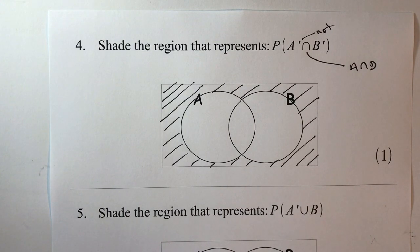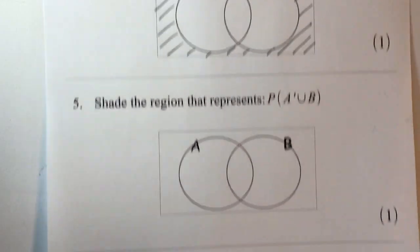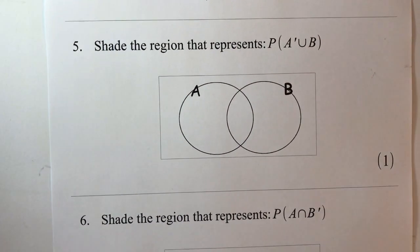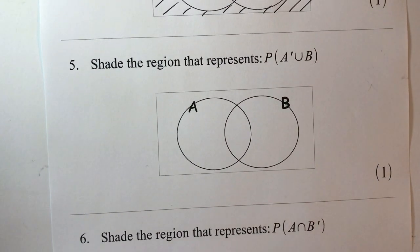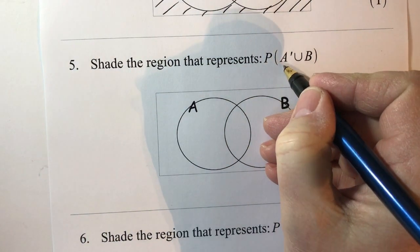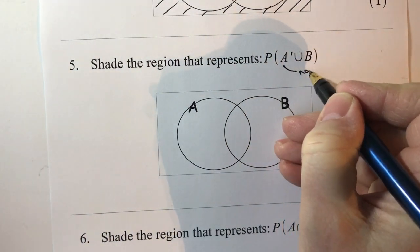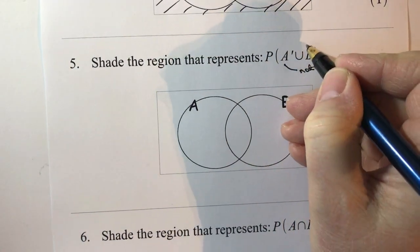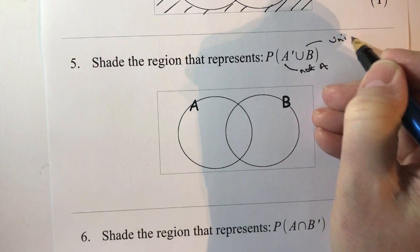Now this is probably where it's just getting a little bit trickier. So we've got shade the region that represents the probability of not A union B. So let's have a look at that. So not A, this is not A, and this is union B.